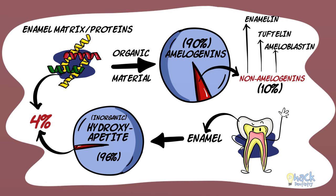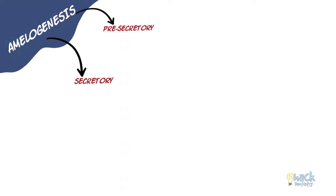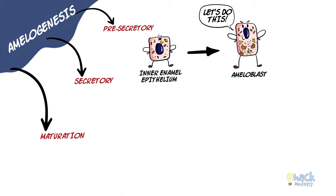Amelogenesis is divided into three stages referred to as the pre-secretory, the secretory, and the maturation stages. The pre-secretory stage is the phase in which inner enamel epithelial cells differentiate to become ameloblasts that are ready for secretion.